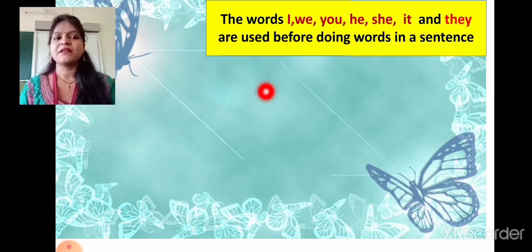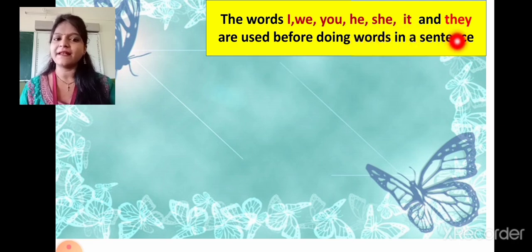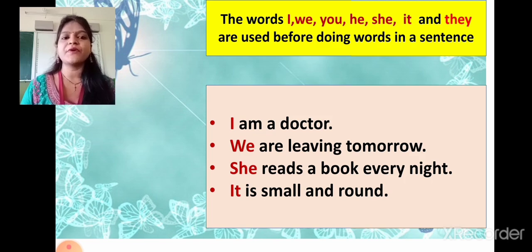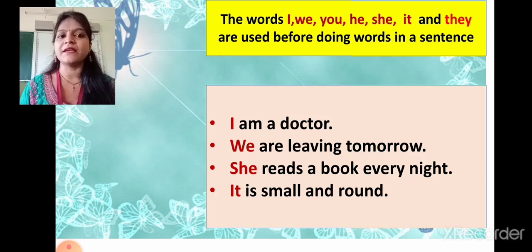Now students, the words I, we, you, he, she, it and they are used before doing words in a sentence. For example: I am a doctor. We are leaving tomorrow. She reads a book every night. It is a small round. So students, before doing words, we use the words I, we, you, he, she, it and they.